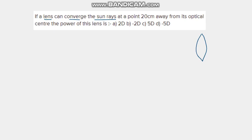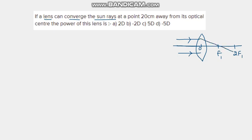We know that the rays coming from the sun are coming from infinity, so they are considered as parallel rays. If we draw them, these are the parallel rays, this is the principal axis, this is the optical center, this is the focus, and this is 2f1, f1, and 2f1. Since the incoming rays are parallel, a converging lens converges all the rays coming from the sun to the focus.